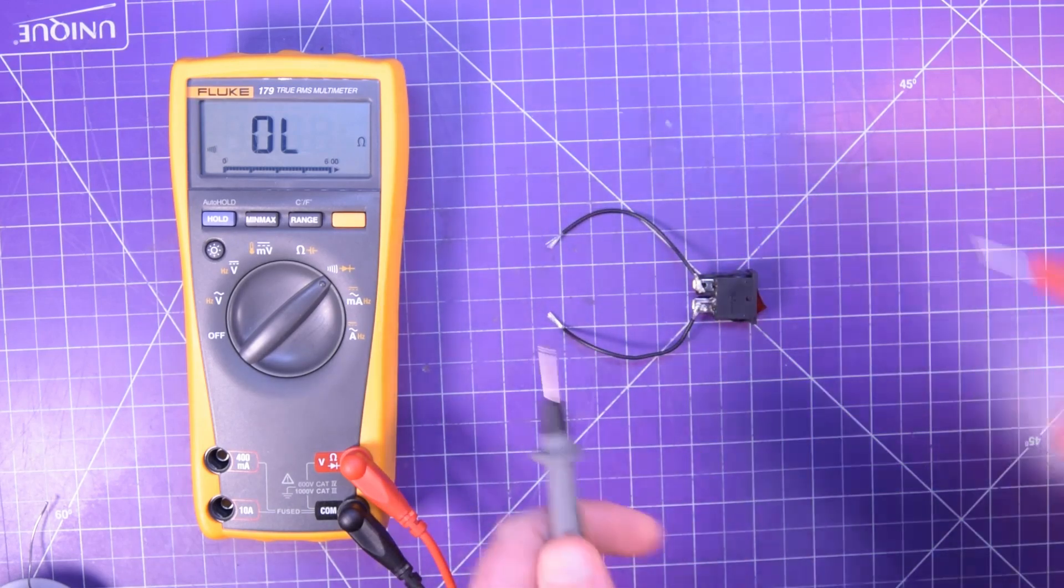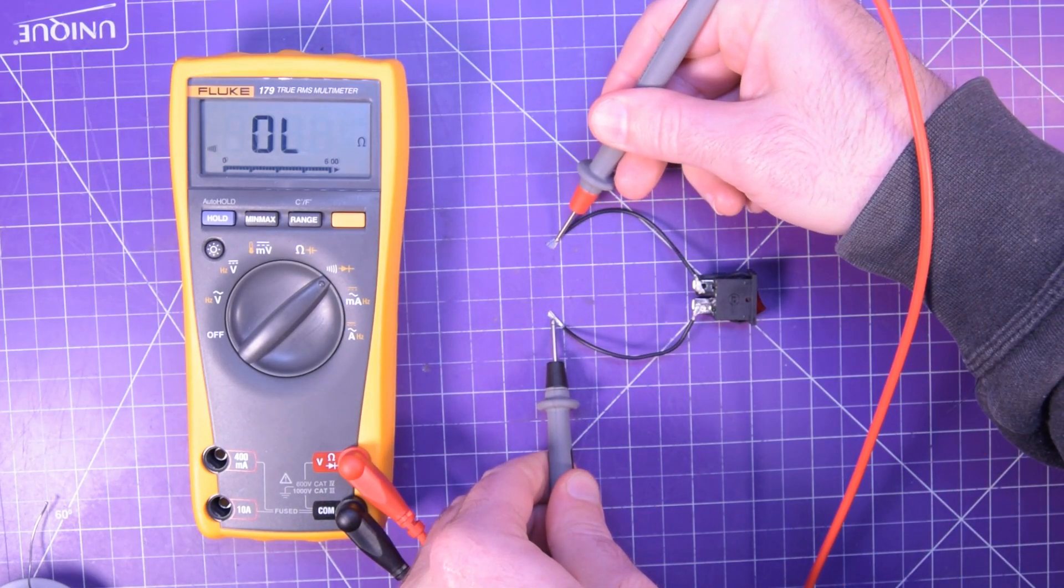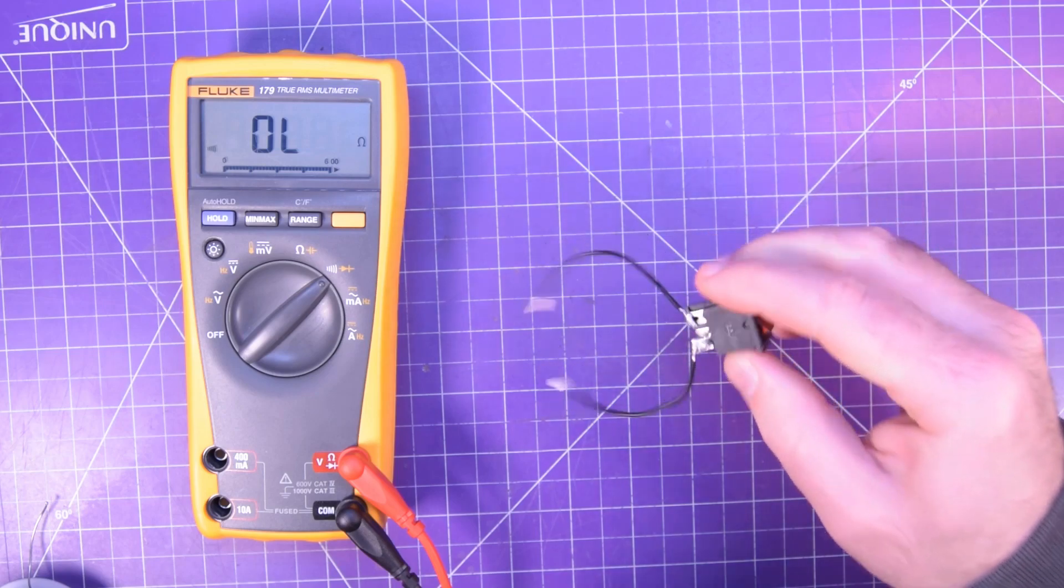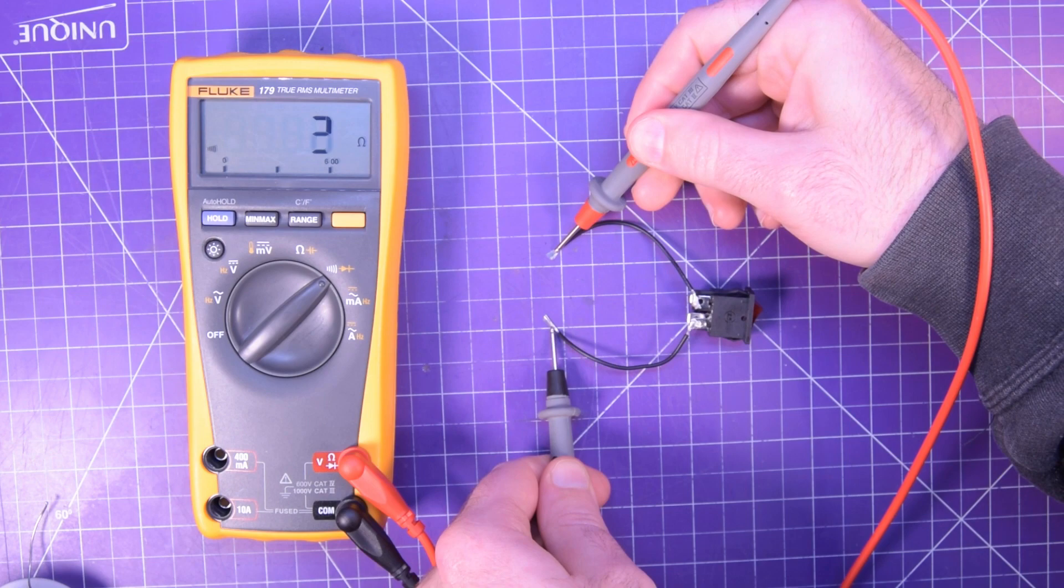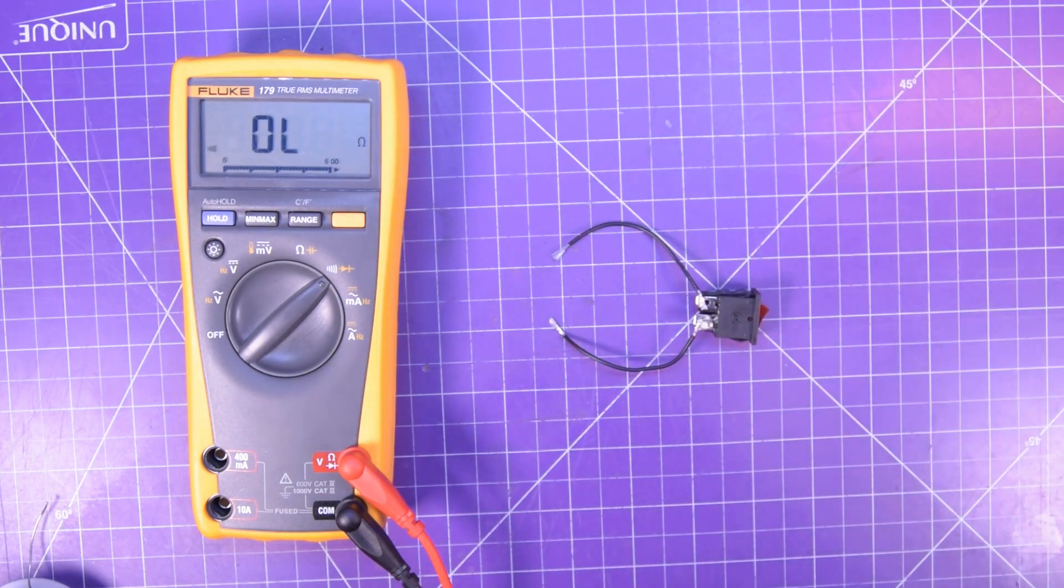Is this switch on or off? Just place any lead on any side. Oh, no continuity there. Let's just flip the switch. Check again. Again, doesn't matter which lead goes where. This one definitely has continuity. That switch is on.